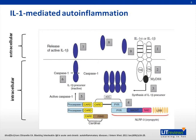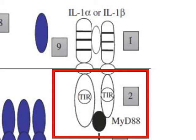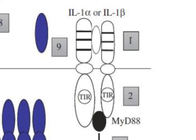This slide demonstrates IL-1-mediated auto-inflammation. Starting with box number 1 in the upper right corner and moving clockwise: cells expressing the receptor for interleukin-1, usually myeloid lineage cells, bind either IL-1 alpha or IL-1 beta. Going towards number 2, following the binding of IL-1 alpha or IL-1 beta to the extracellular domain, the intracellular TIR domains are activated, these recruit a signaling molecule called MyD88, and this initiates signal transduction to the nucleus.